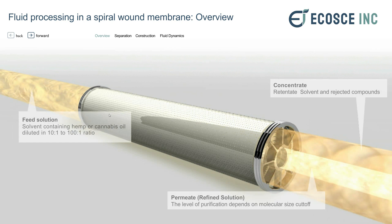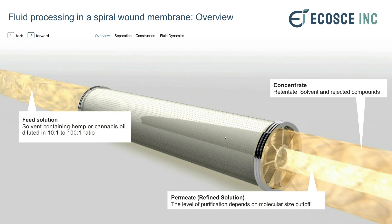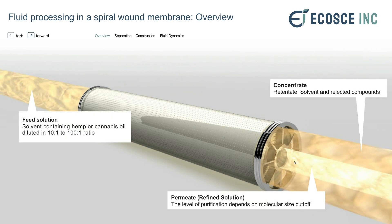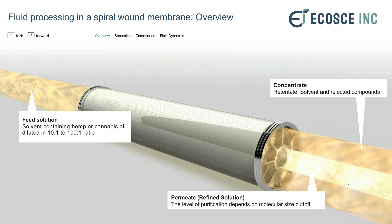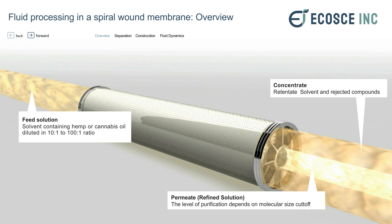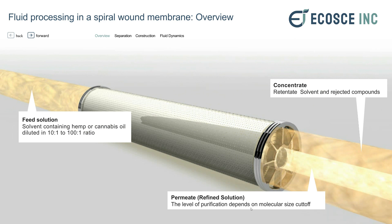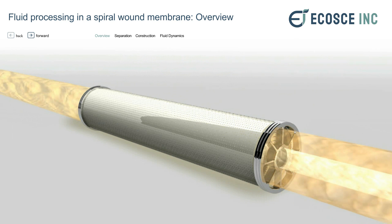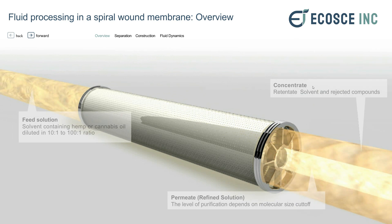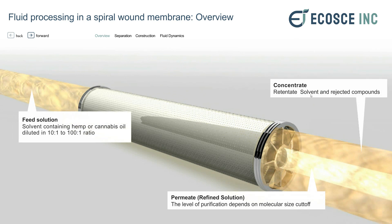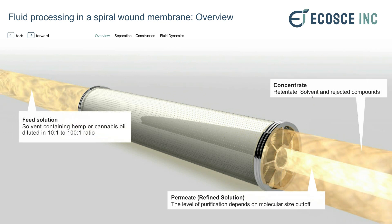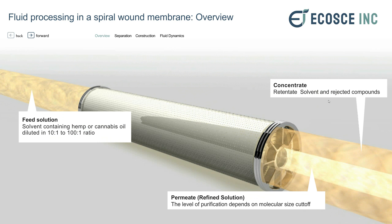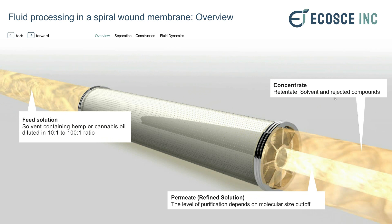The solution is fed into the membrane, and what is allowed to pass is called the permeate stream, and that is set by the level of molecular cutoff of the membrane. A stream that is rejected is called the retentate stream, and these are the compounds that do not make it through the membrane.